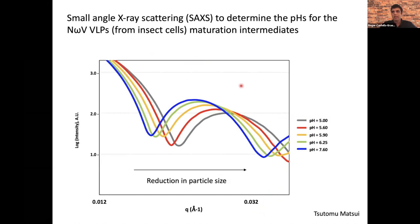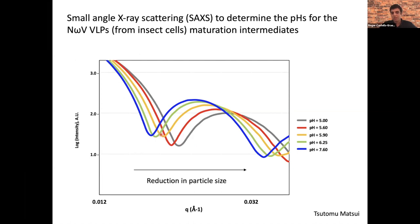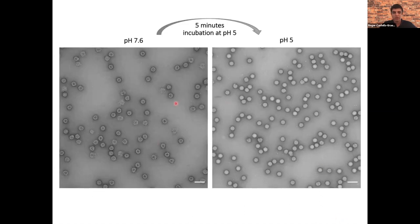To select all the different pH values for the different intermediates, we collaborated with Stomomatsui from Stanford, who did a SAXS analysis. We tested a range of pHs. In this plot, the scattering from SAXS shows the procapsid in blue, and as you move to the right there is a reduction in size that corresponds to a reduction in pH. We selected these pHs to use. As an example, from pH 7.6 to pH 5, you can see a drastic change in size and conformation — the particles become much more compacted.